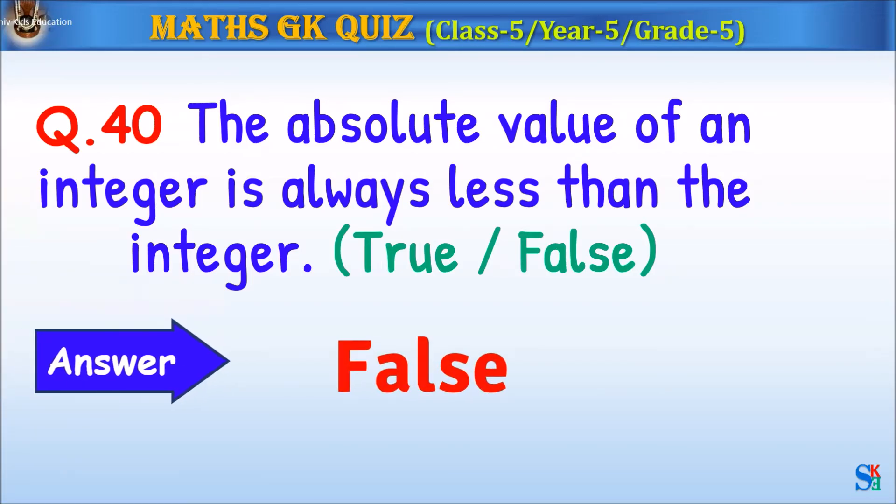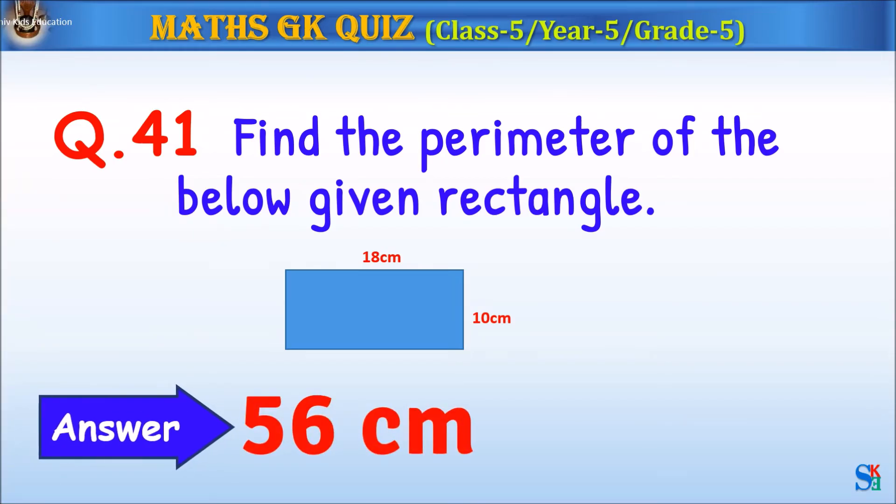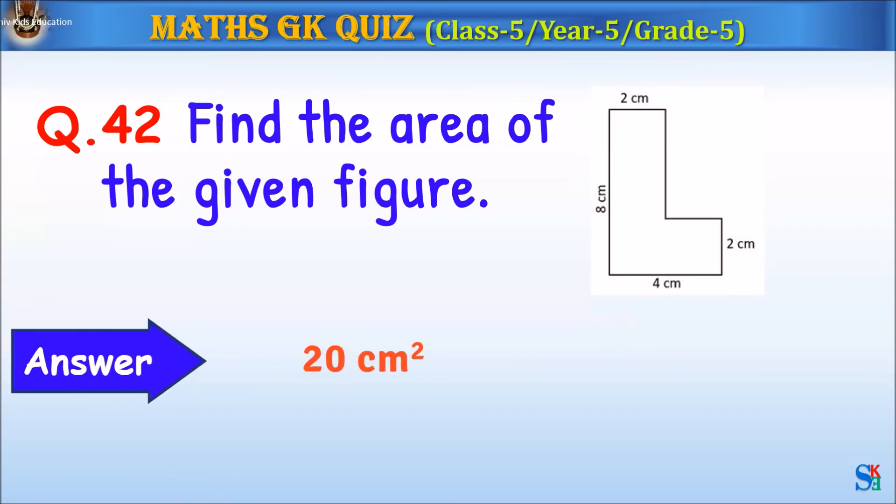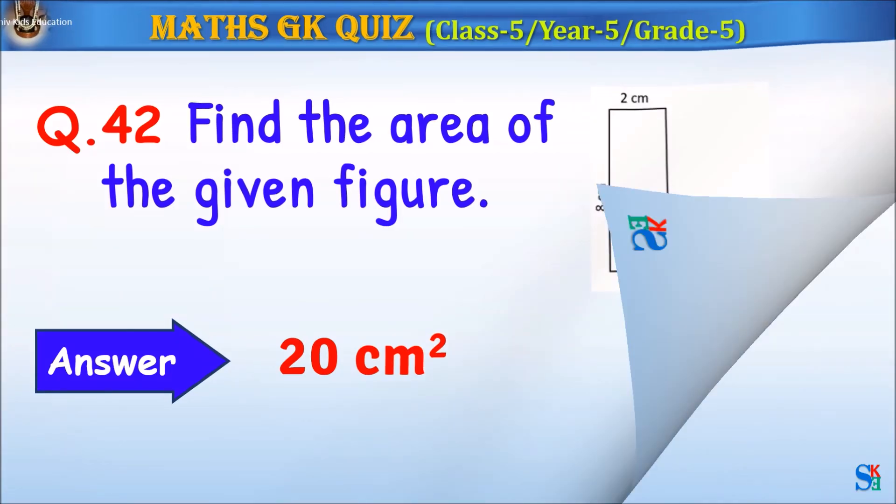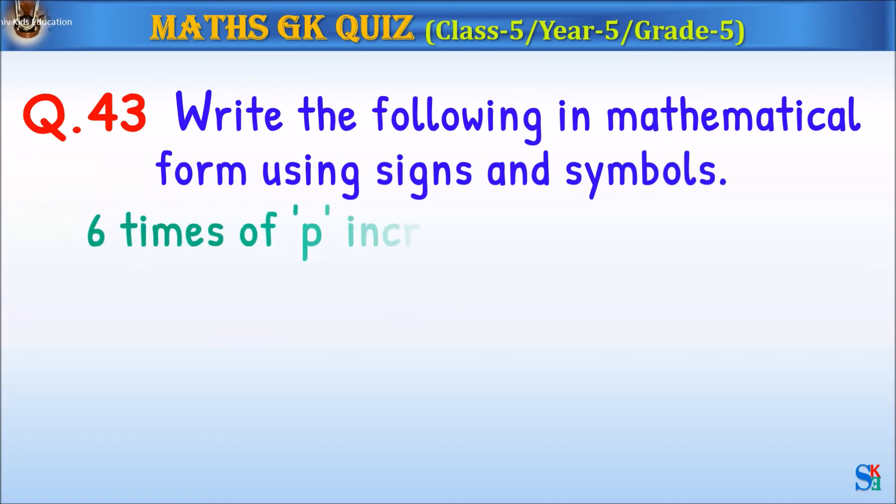Question 40: The absolute value of an integer is always less than the integer, true or false? The answer is false. Question 41: Find the perimeter of the below given rectangle. The answer is 56 centimeters. Question 42: Find the area of the given figure. The answer is 20 centimeters squared.